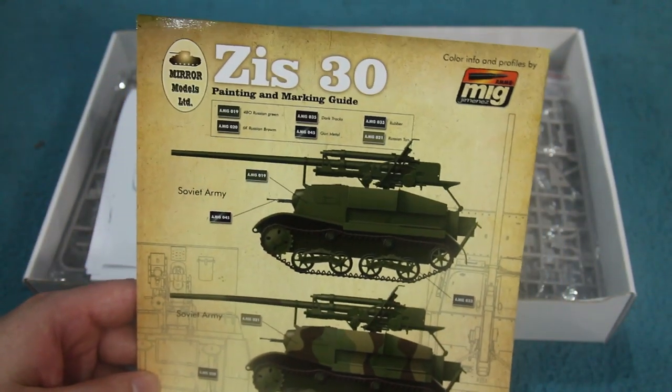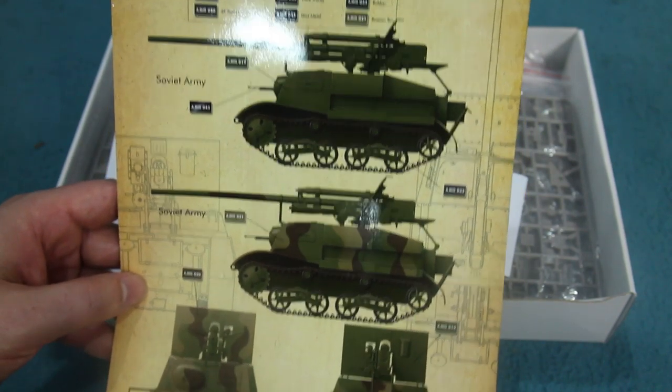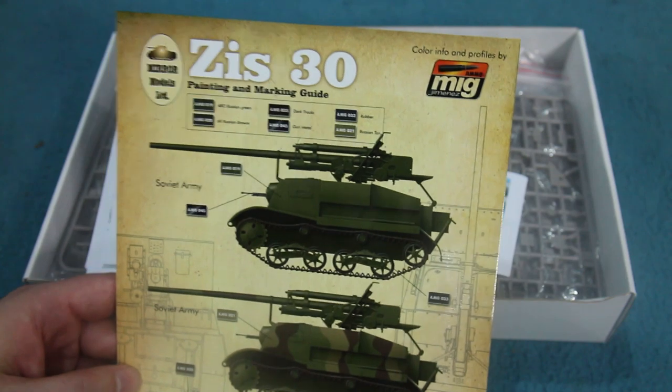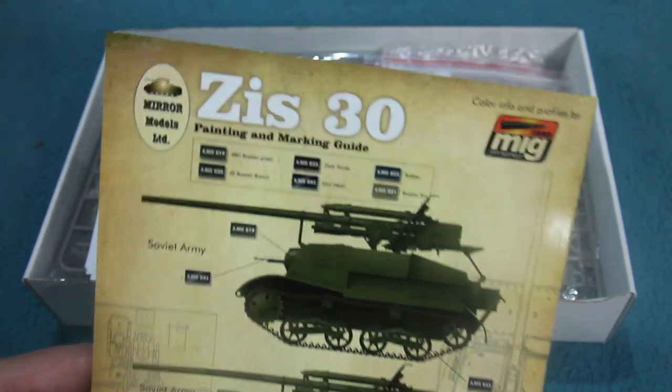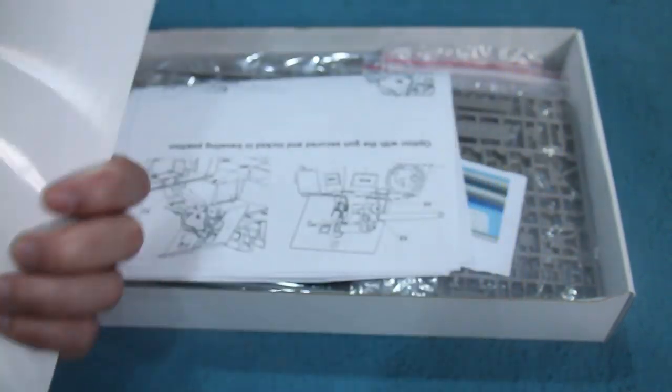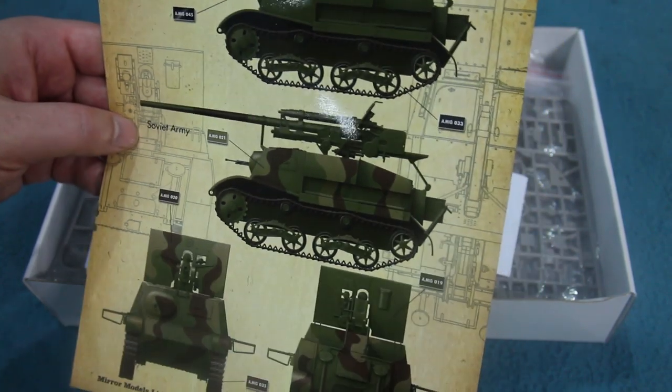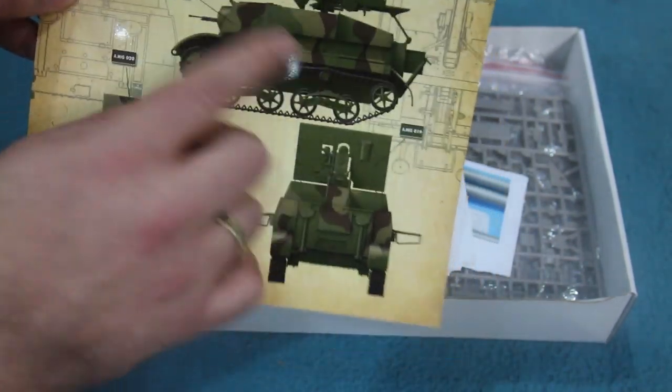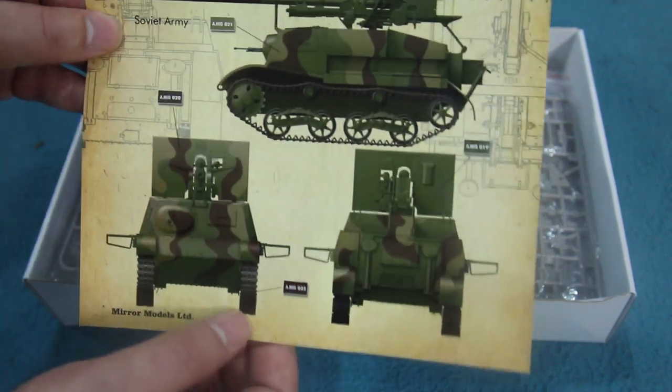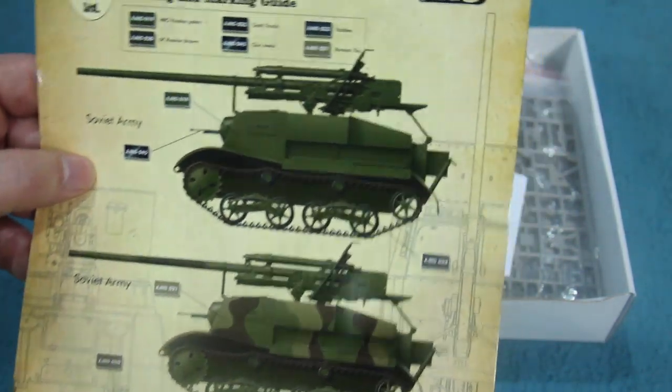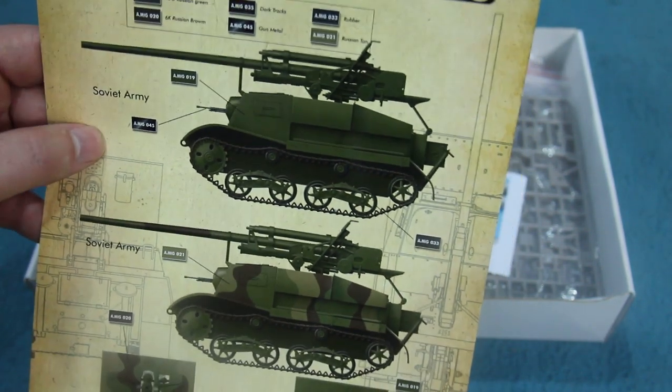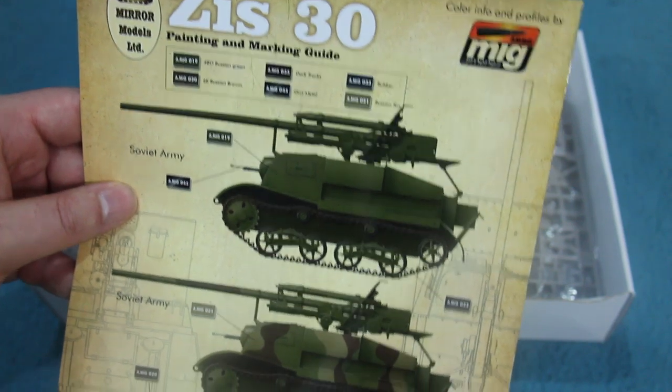What do we have in the box? Well, we've been greeted straight away with something very nice. This is a painting guide prepared by Ammo by MIG. Obviously it suggests that you use Ammo paints, but it's a very nice four-color guide. It's laminated, a very nice piece of quality. There's a three-color camo scheme here and a protective green vehicle as well, with the relevant Ammo paint callouts.